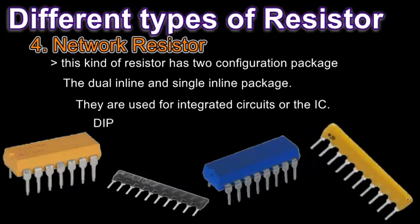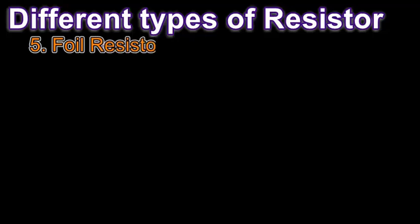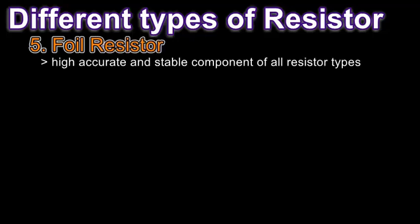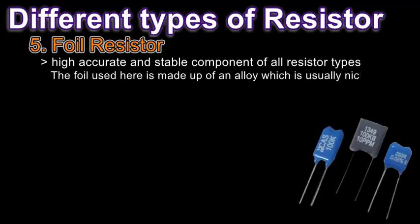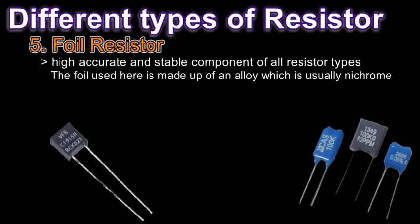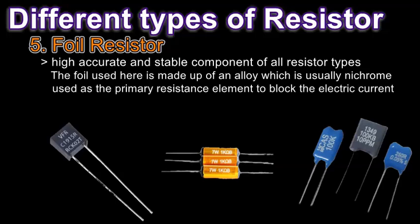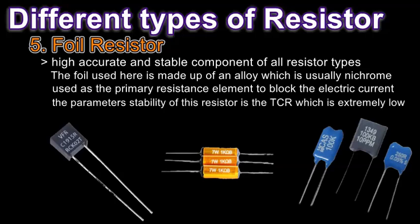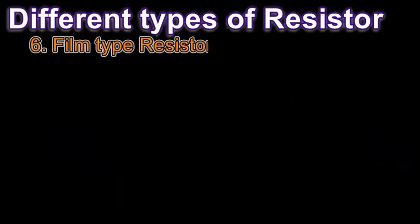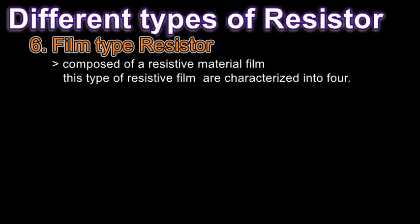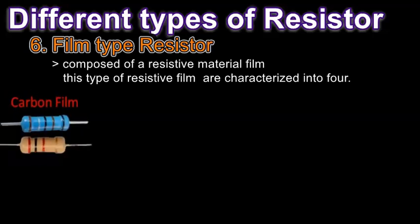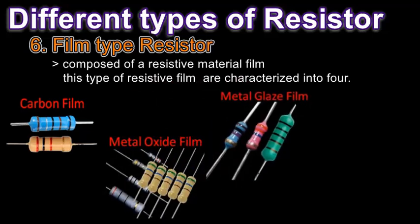A DIP typically contains 14 to 16 pins. The next type is the foil resistor — a highly accurate and stable component among all resistor types. The foil used is made of an alloy, usually nichrome with additives, and serves as the primary resistance element to block electric current. An important parameter of this resistor is the TCR — temperature coefficient of resistance — which is extremely low. The last type is the film resistor, composed of a resistive material film, characterized into four categories: carbon film, metal oxide film, metal glaze film, and metal film.